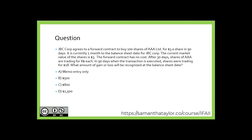Let's look at another question. JVC Corp agrees to a forward contract to buy 100 shares of AAA Limited for $3 a share in 90 days. It is currently one month to the balance sheet date for JVC Corp. The current market value of the shares is $3. The forward contract has no cost. After 30 days, shares of AAA are trading for $8 each. In 90 days, when the transaction is executed, shares were trading for $18. What amount of gain or loss will be recognized at the balance sheet date? Is it A, just a memo entry; B, $500; C, $800; or D, $1,500?